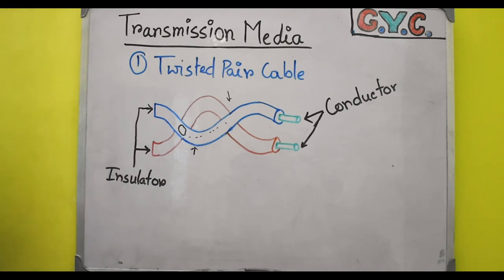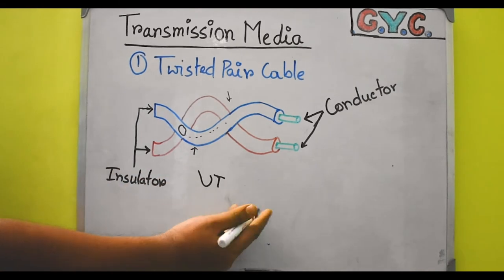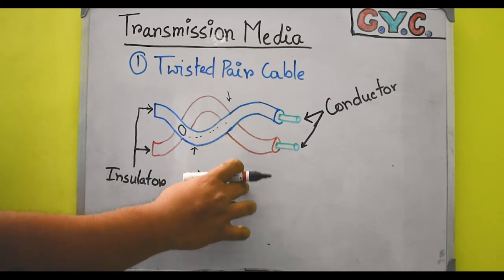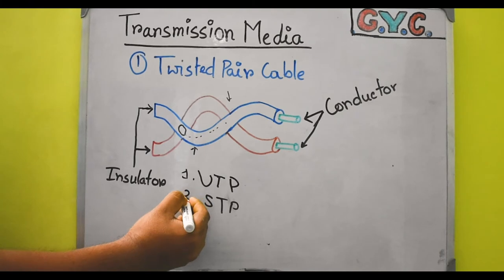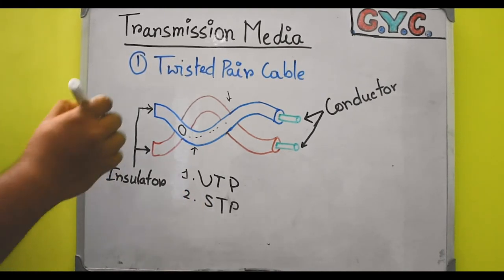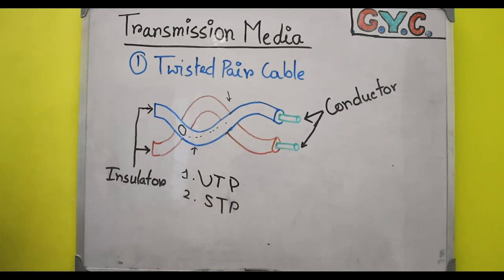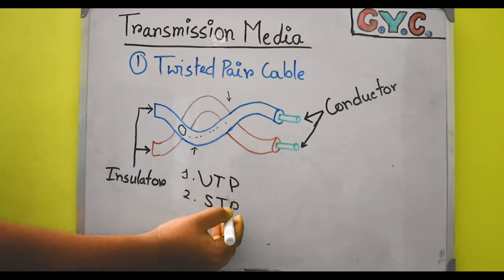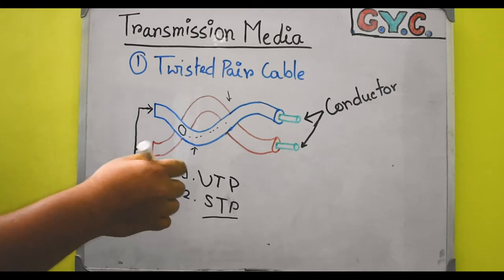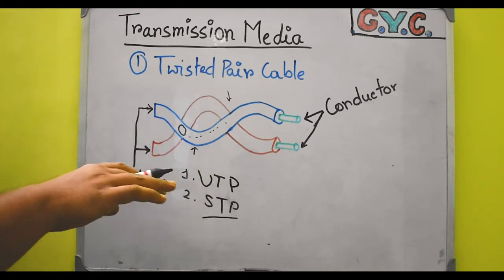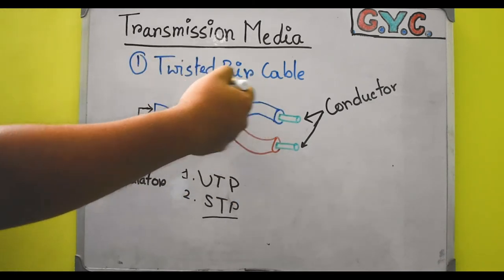Twisted pair cable can be divided into two further categories: one is UTP — unshielded twisted pair — and another one is STP — shielded twisted pair. The main difference between them is that UTP is the normal twisted pair cable and is mostly used everywhere. IBM introduced STP for their own use, and nowadays a few people use STP, but UTP is used mostly everywhere.